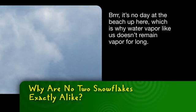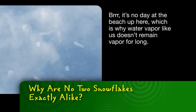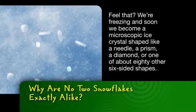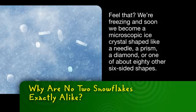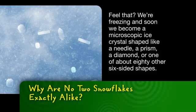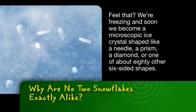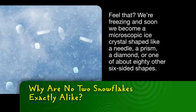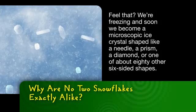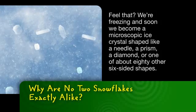It's no day at the beach up here, which is why water vapor like us doesn't remain vapor for long. We're freezing, and soon we become a microscopic ice crystal — shaped like a needle, a prism, a diamond, or one of about 80 other six-sided shapes.